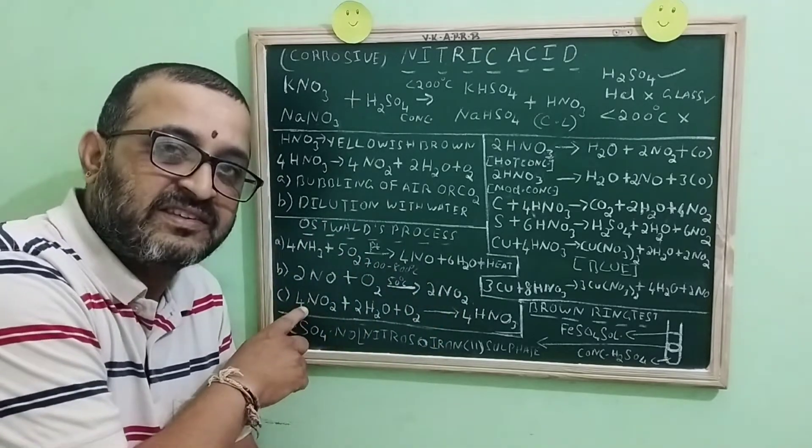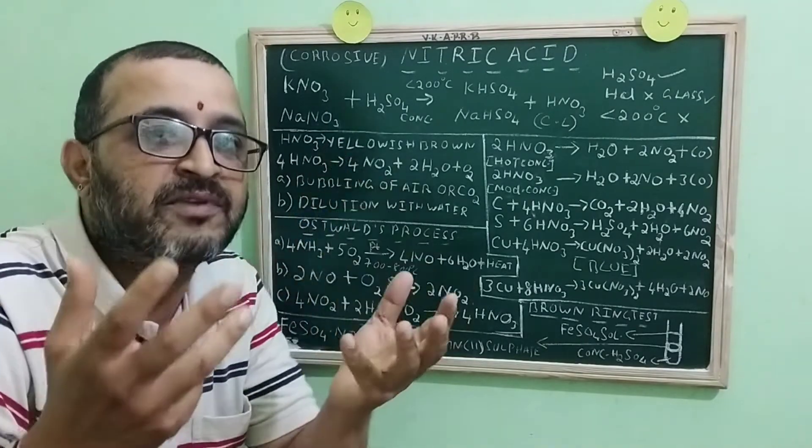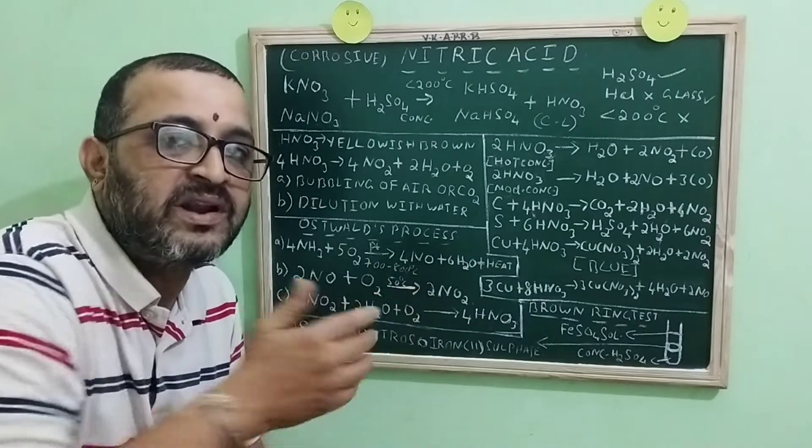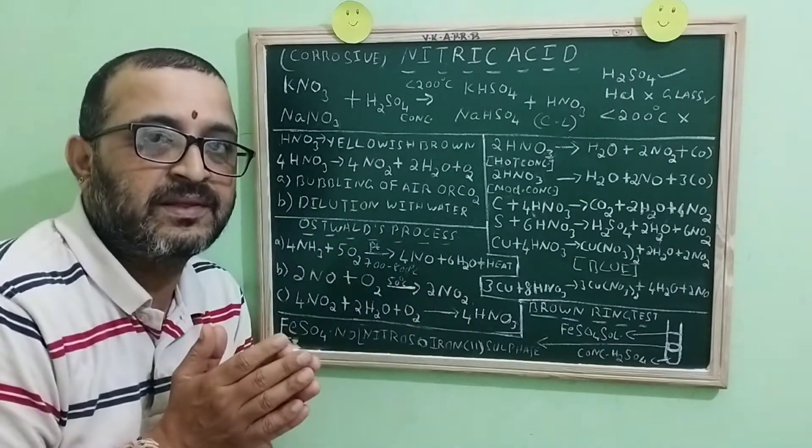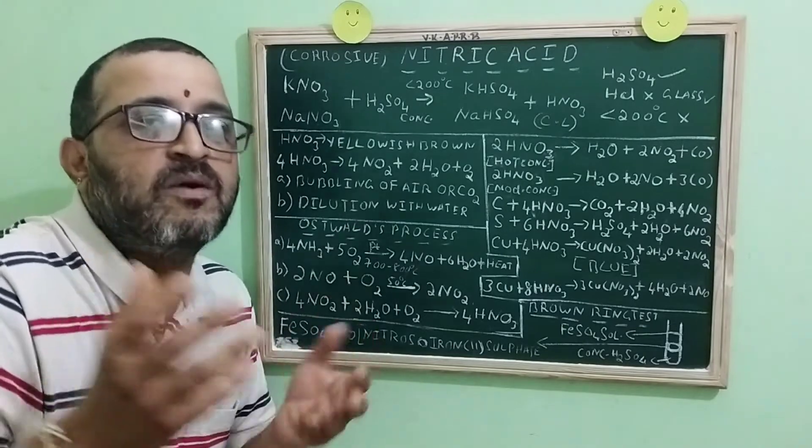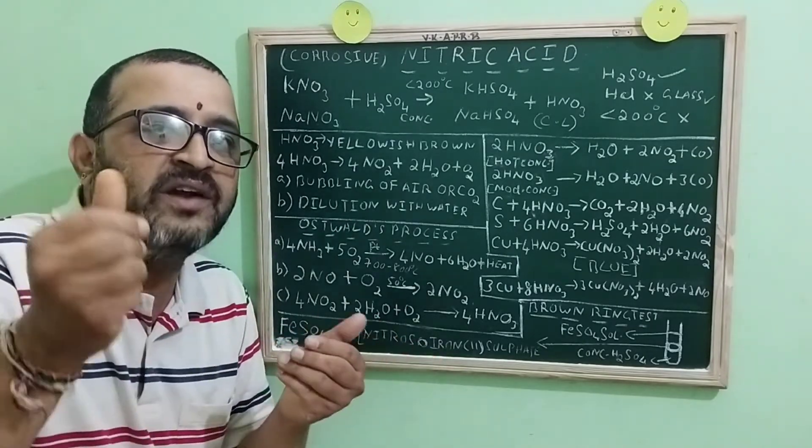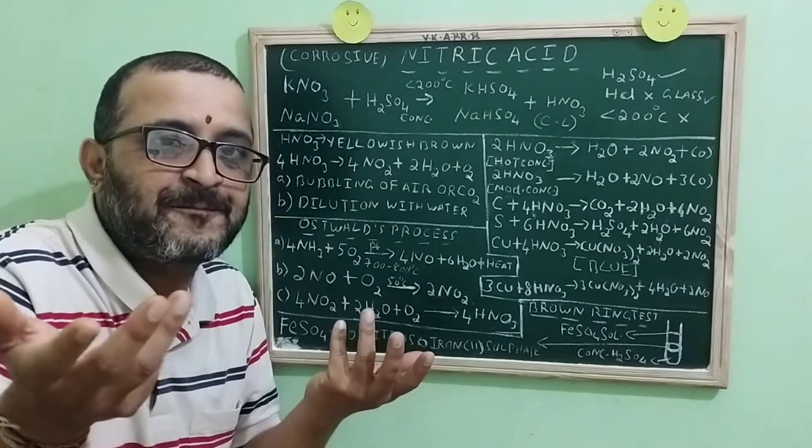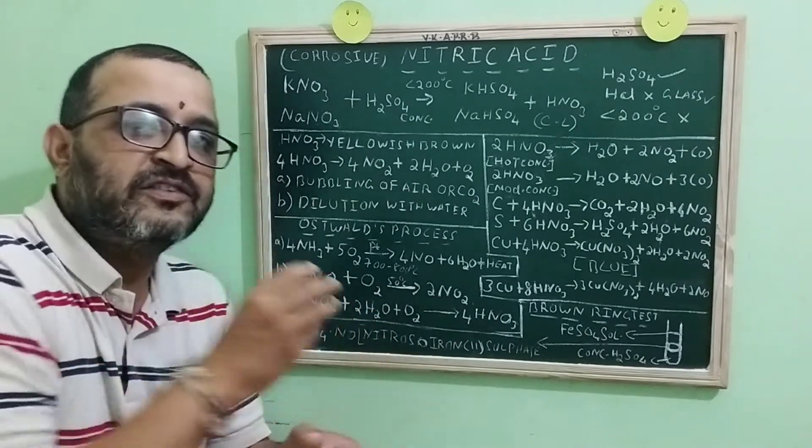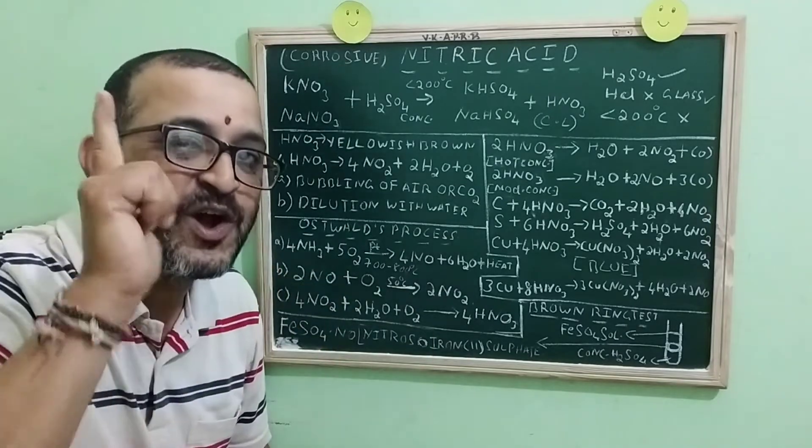This third step, that is absorption of nitrogen dioxide, is done in absorption tower. There, we are going to fill it with quartz. What is the job of quartz? Quartz is nothing but SiO2. Quartz is acid resistant. And this quartz will help in the better absorption of nitrogen dioxide in water.